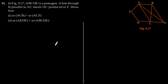Exercise 9.3 question number 11. In figure 9.27, ABCDE is a pentagon. A line through B parallel to AC meets DC produced at F. Show that first, area of ACB is equal to area of ACF.